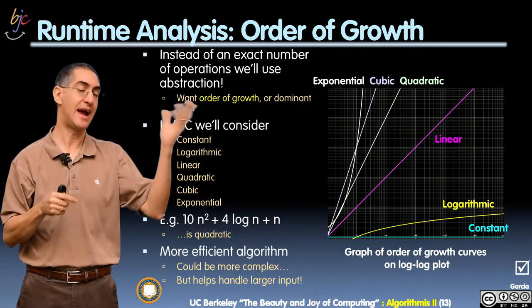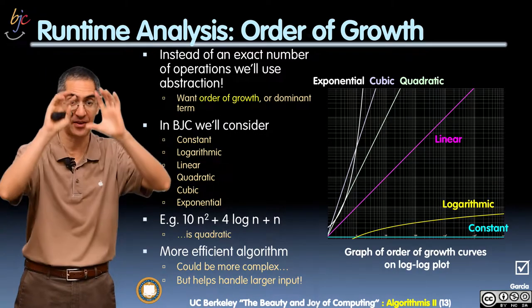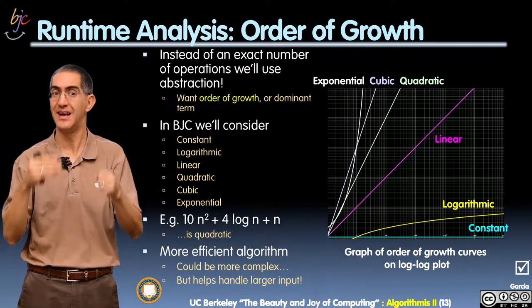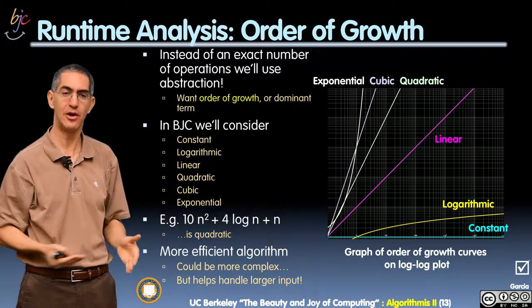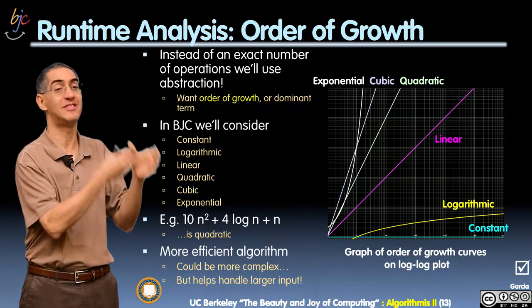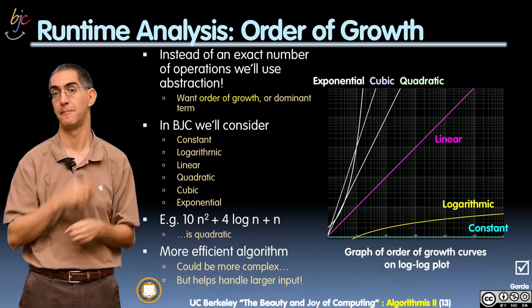So for example, if I actually come up with an actual equation, 10n squared plus 4 log n plus n, how does that kind of grow? If you look, the dominating term is the largest term. So the largest term is the n squared term. And you remember, the squared is a quadratic. So it's going to grow as a quadratic.